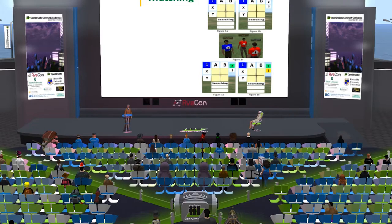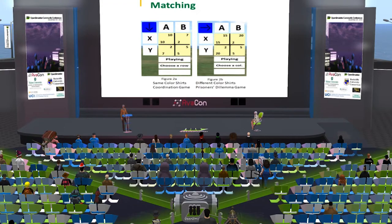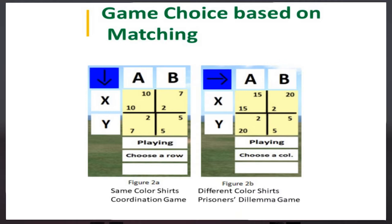Here's an example: if you're matched with someone wearing the same color shirt, you play a coordination game. If matched with someone wearing a different color shirt, you play a prisoner's dilemma. Coordination games are easier and more comfortable for people; prisoner's dilemma games are harder. The question is whether this affects how players choose to match with one another.